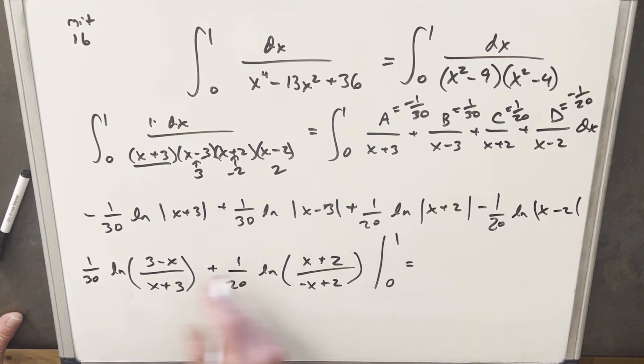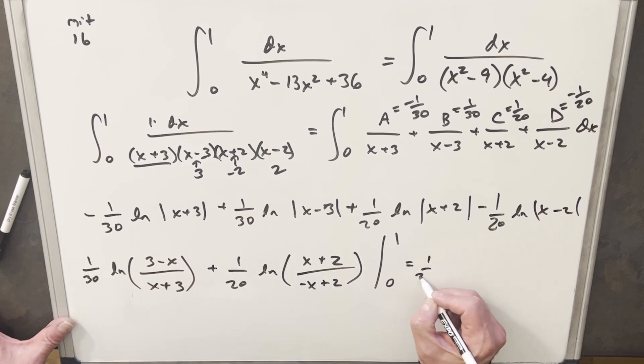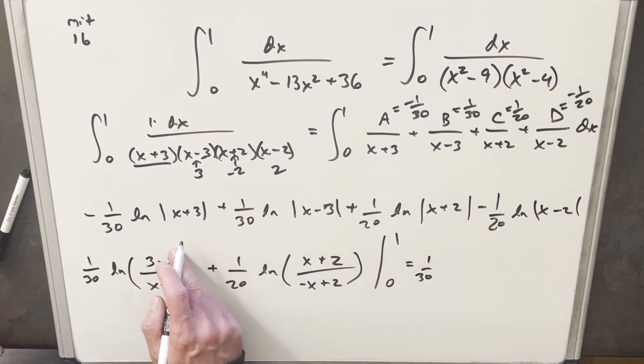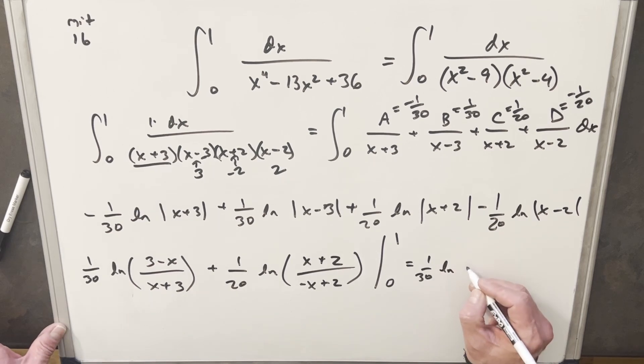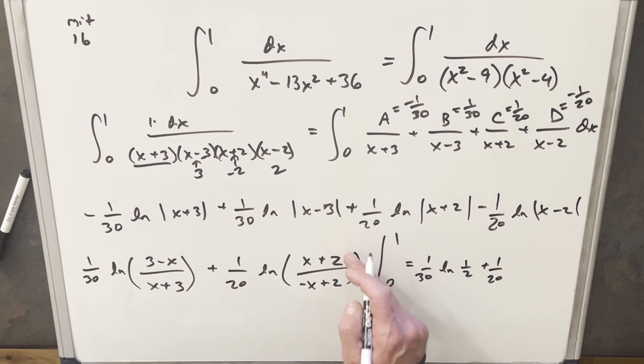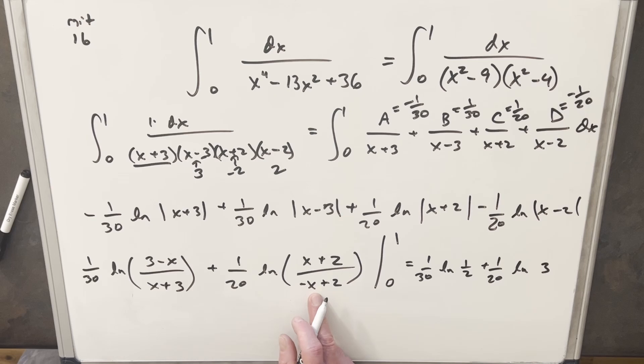Okay, so now I'm ready to evaluate this. We'll plug a 1 in here. So I'm gonna have 1 over 30, natural log. Plugging in 1, we're gonna have 2 over 4, so that's gonna be natural log a half. Then next we have our 1 over 20. Plugging in 1, we're gonna have 3 over 1, so this is just gonna be natural log of 3. Next we need to deal with this 0. Now notice when we plug a 0 in here, we end up with 3 over 3, but that's gonna be 1. Natural log of 1 is 0, so we don't have to worry about that. And then same thing here, right? We plug a 0 in, 2 over 2 is 1, natural log of 1 is 0. And so all the 0 terms are just going away.